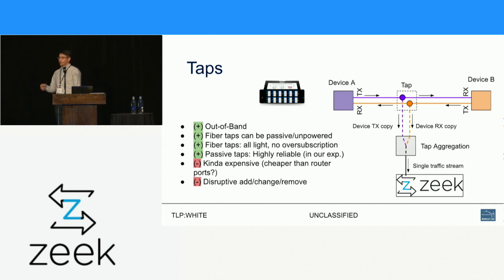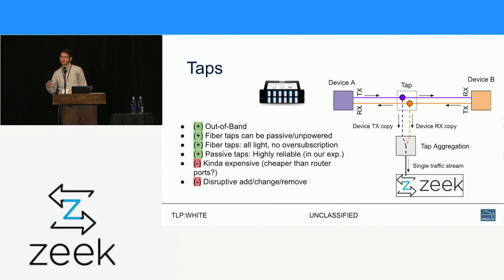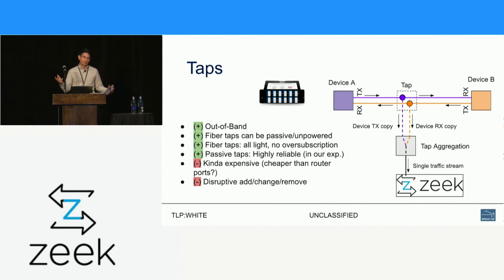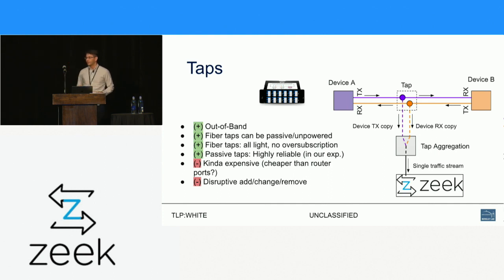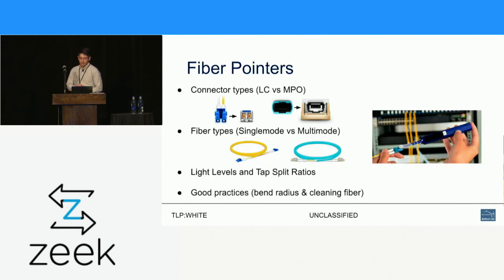On the downsides, they are kind of expensive — it's not just a free configuration item on your switch or router. You're spending a couple hundred to maybe a thousand dollars per tap. Compared to a 100 gig port on a big expensive edge router that costs tens of thousands of dollars per port, maybe that's not that bad. But the thing that is hard to get around is they're disruptive — you're installing them inline on a link and you have to disconnect that fiber to plug in your tap.